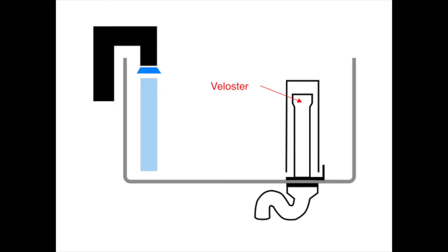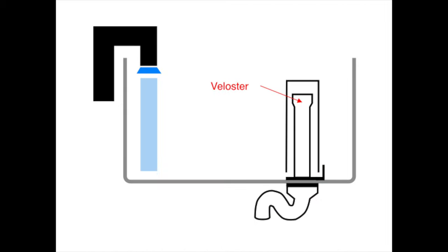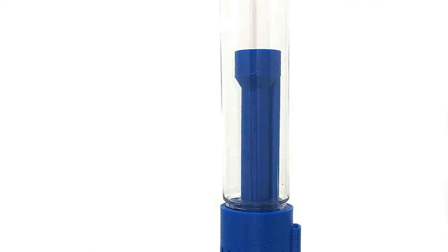This is the Veloster. The Veloster is a specially shaped hydrodynamic device designed to facilitate fail-safe starting of the siphon by passing a large volume of water into a narrow riser pipe.